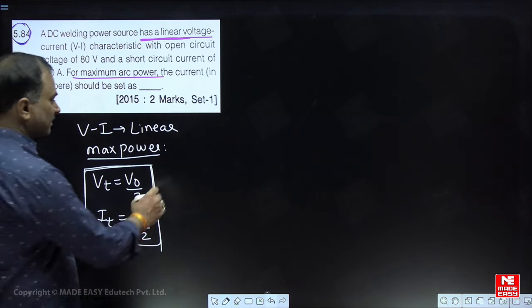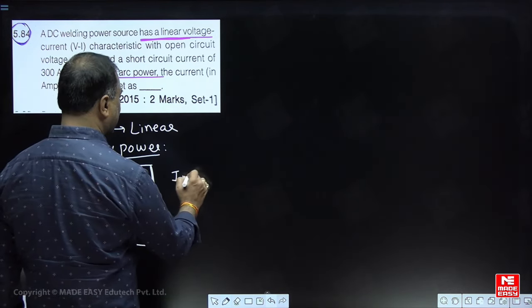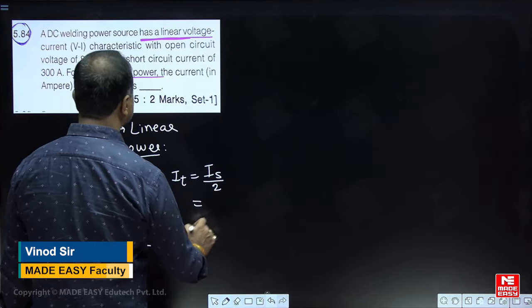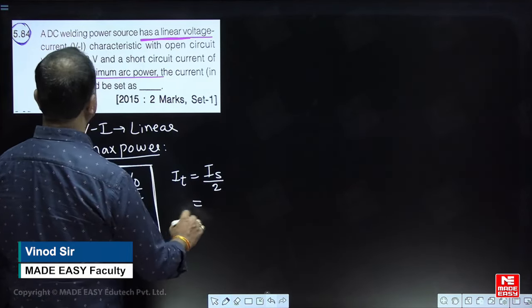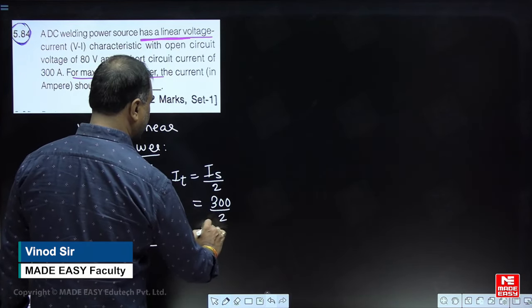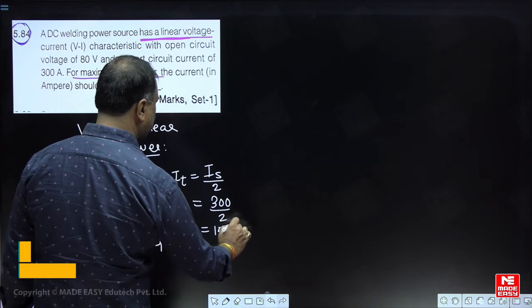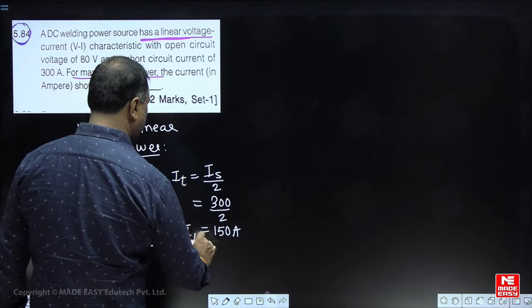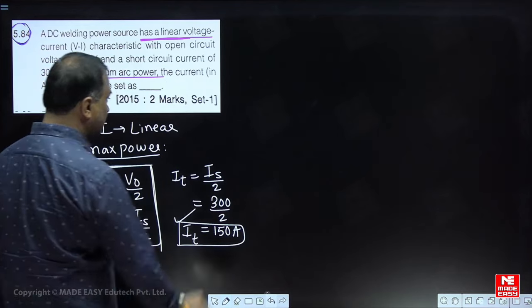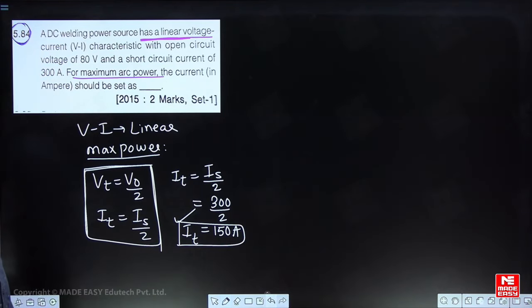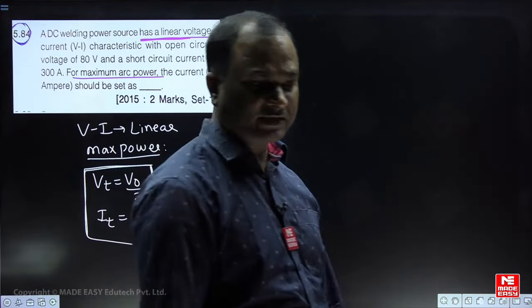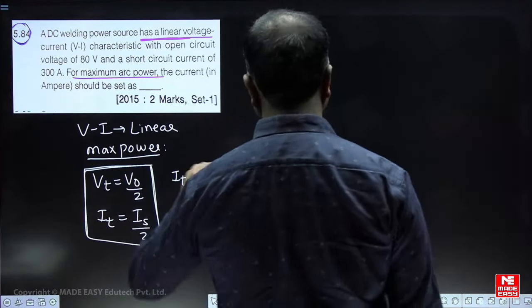Using the shortcut method: I_T = I_S / 2 = 300 / 2 = 150 amperes. So for maximum arc power condition, the current should be set to 150 amperes.